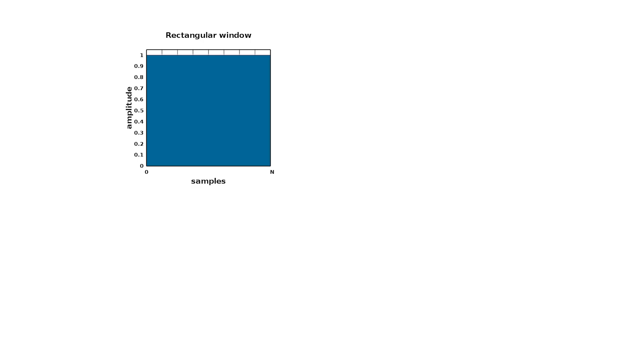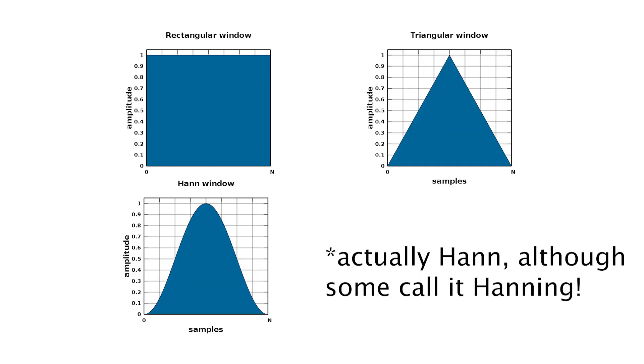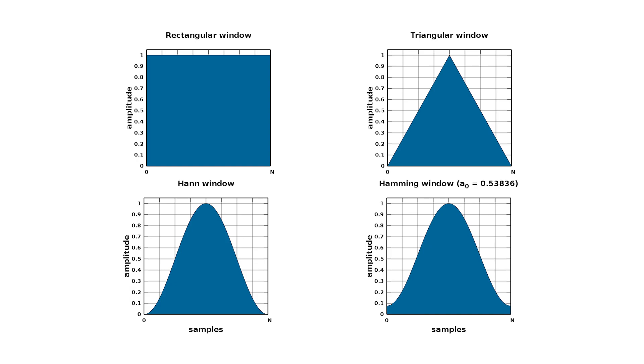So now we know how to shrink our transition band — we just take more samples before we truncate. But if taking more samples has no effect on the pass band and stop band ripple, then how do we control those properties? This is where fancier window functions come in. Besides the rectangular window, some examples include the triangular window, the Hanning window, and the Hamming window. Let's look at these in the frequency domain to see how their shape affects the properties of our real filter G.